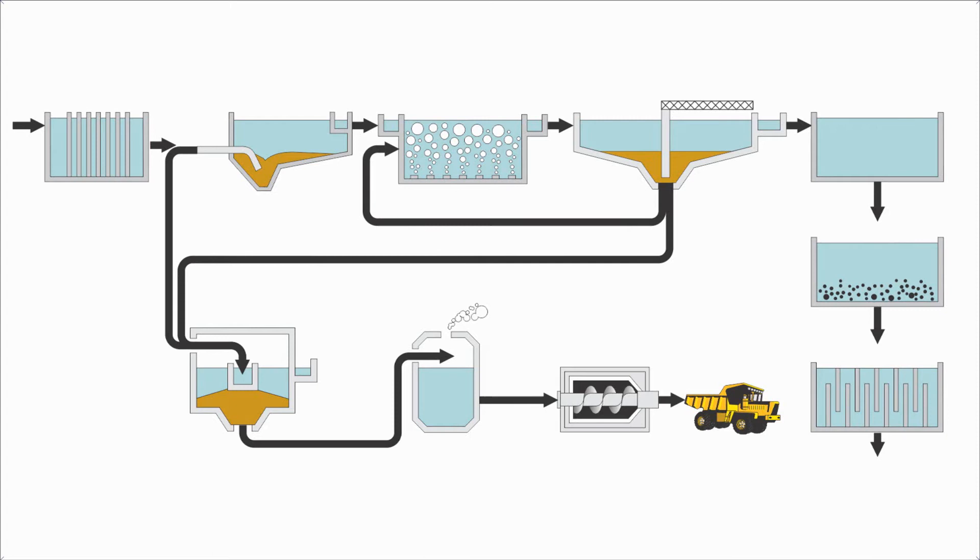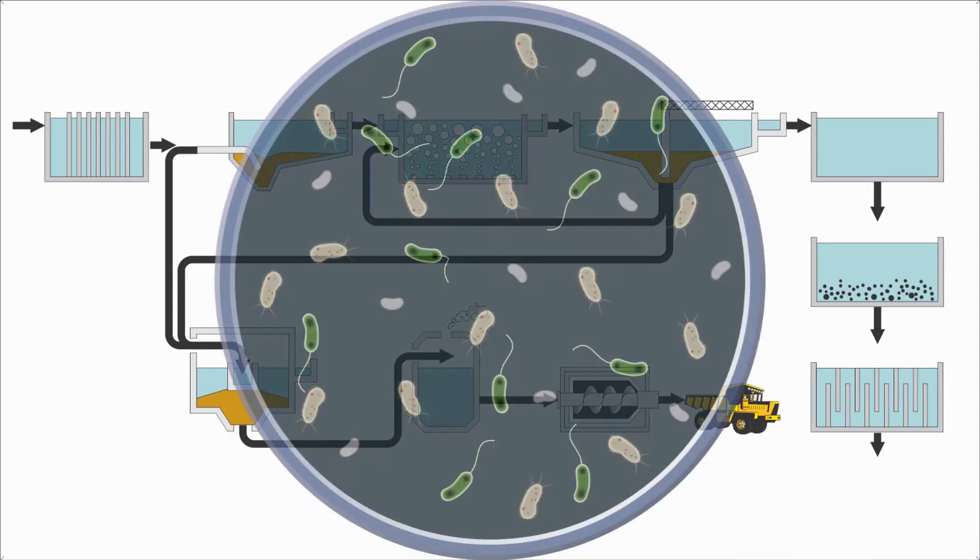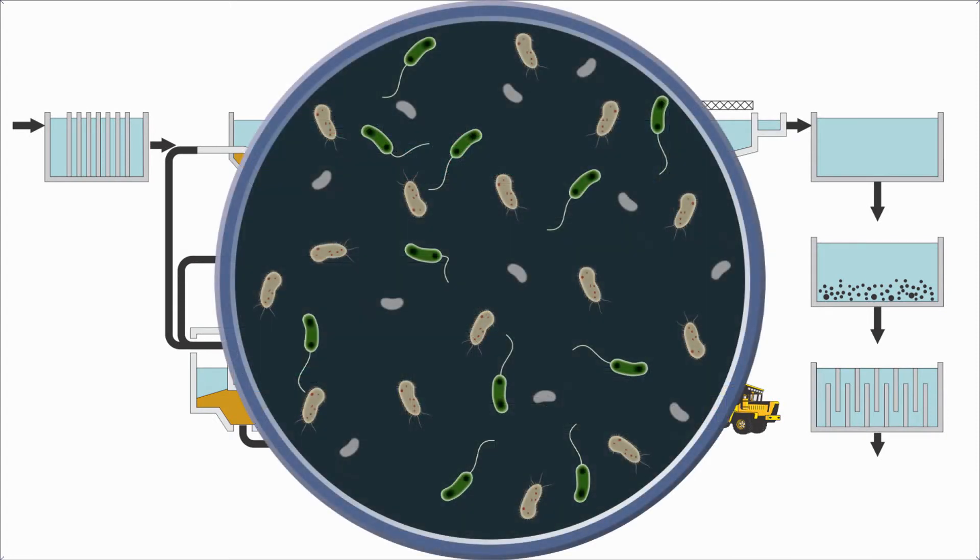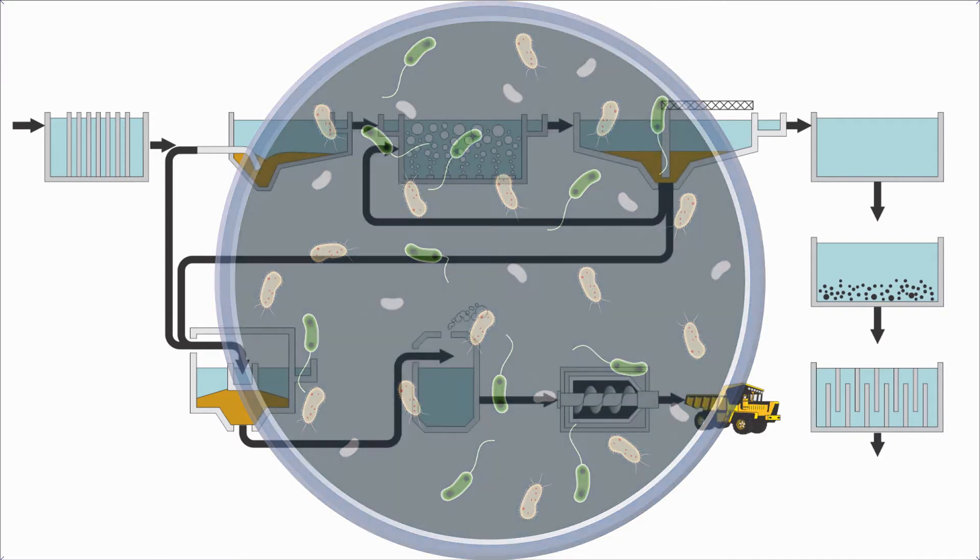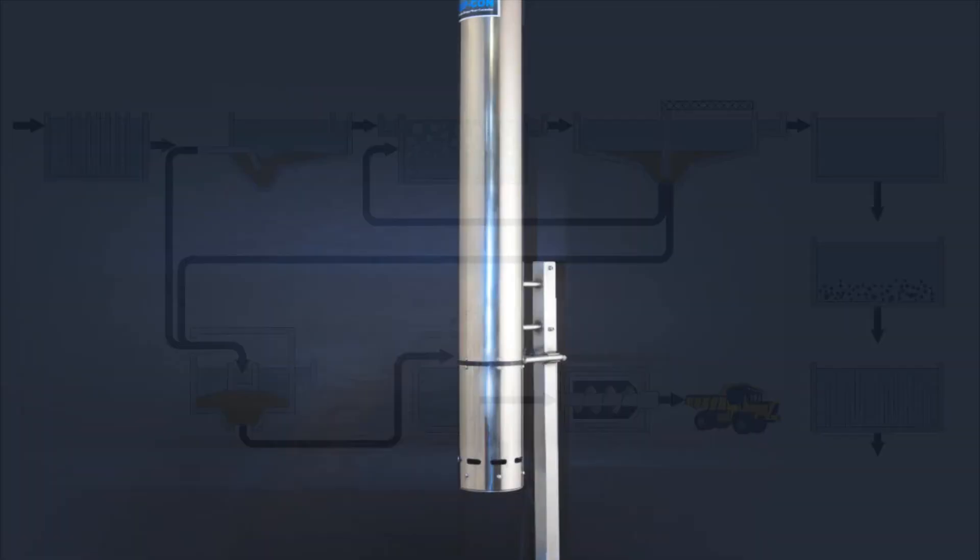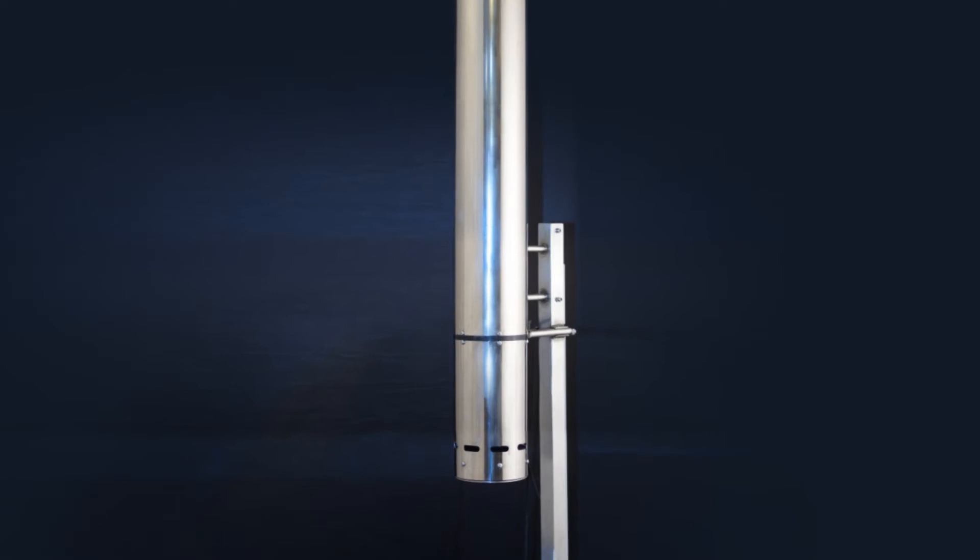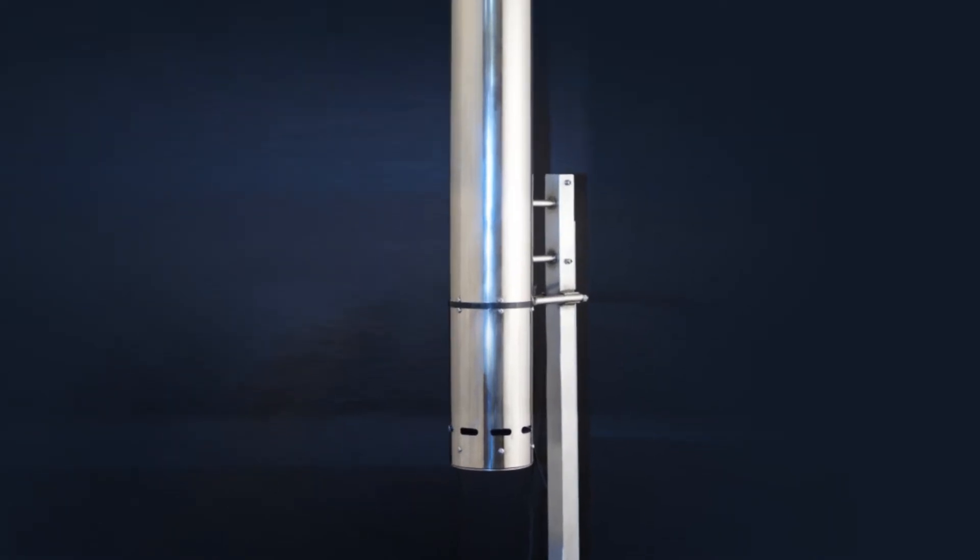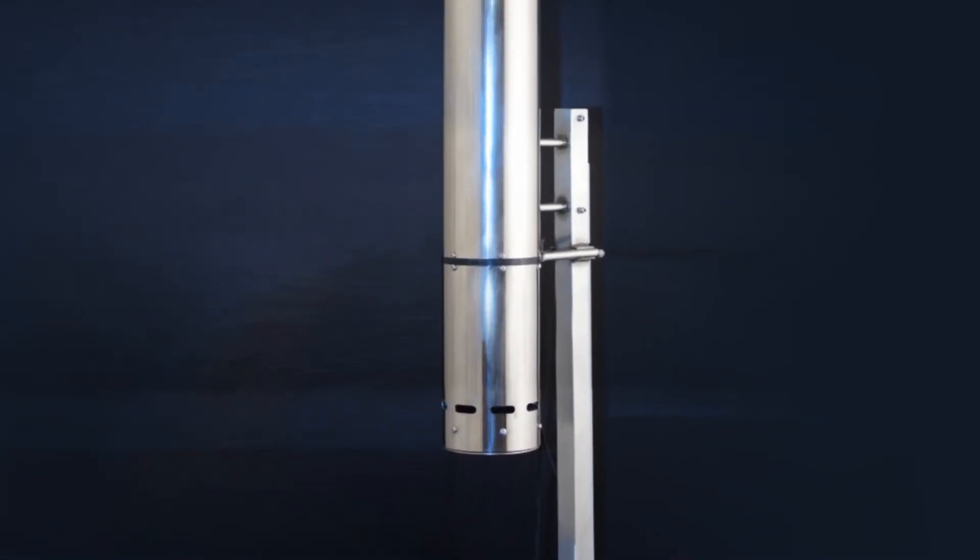The activated sludge process relies on a healthy, active biomass, yet many plants lack the data for efficient process control. The in situ ASPCON is designed to perform many labor-intensive and time-consuming analyses to collect the data you need to achieve optimal plant performance.